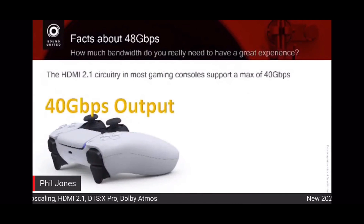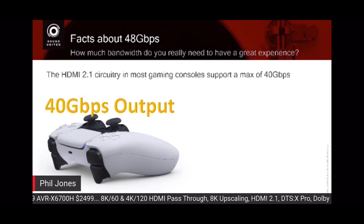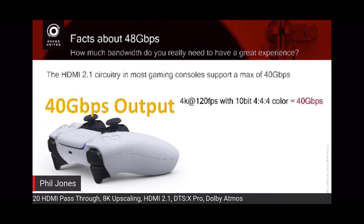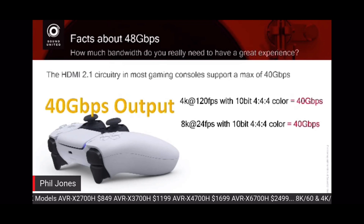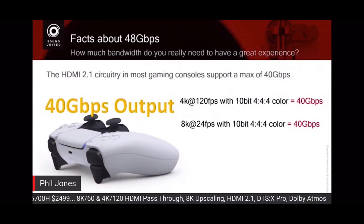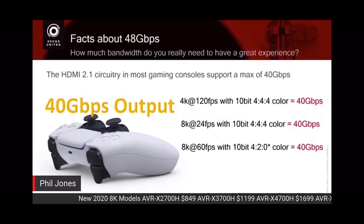Game system boards for a high-end console or graphics card can support four channels of 10 gigabits per second for HDMI, which means 40 gigabits per second is the maximum output. You could do maybe 4K at 60p 12-bit 4:4:4 because that's under 40, but if you want 120 frames per second it has to be 10-bit because the card can only output 40. So 40 is from the sources, 40 is the panel — 40 is the maximum.